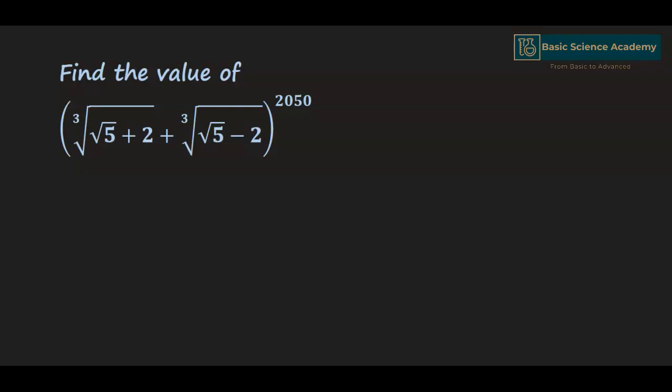In this video we are going to discuss the question: find the value of cube root of (√5 + 2) plus cube root of (√5 − 2), to the power of 2050. Since the power is very high, we'll start from the base, which is cube root of (√5 + 2) plus cube root of (√5 − 2). Let's consider this as u.